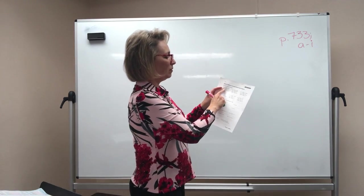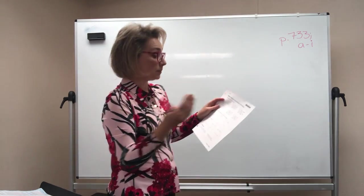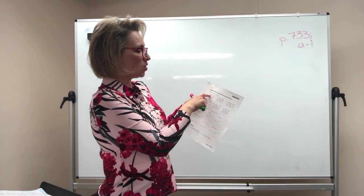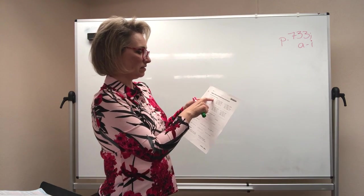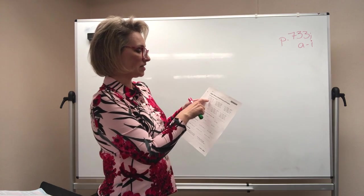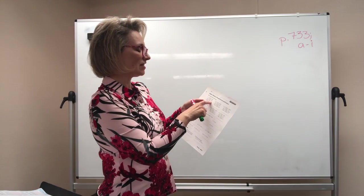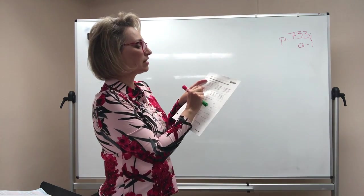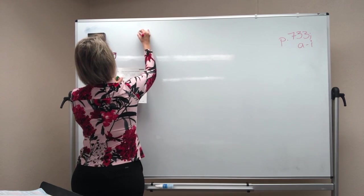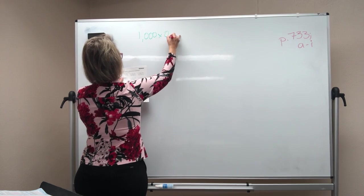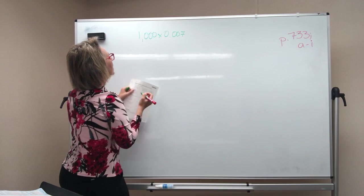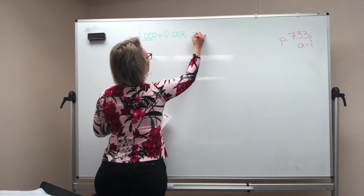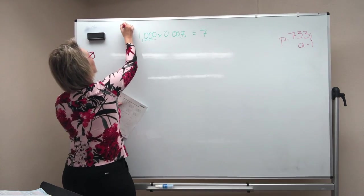So grab your worksheet that says 10.2. Up at the top part, numbers one through six, it says use mental math to complete. It's because you're going to see a pattern. You're going to know what's happening next. Number one says one times 0.007 is 0.007. Ten times 0.007 is 0.07. A hundred times 0.007 is 0.7. So you see the pattern there. You have to fill in the last one. Instead of trying to fit it in the little tiny box, you're just writing on the line. And so the last problem for you is the one you do there. It's a thousand times 0.007. So I'm looking at how many zeros I have. One, two, three. I move this over. One, two, three. There's my zero. So that equals seven. So you'd write a seven on the line for number one.